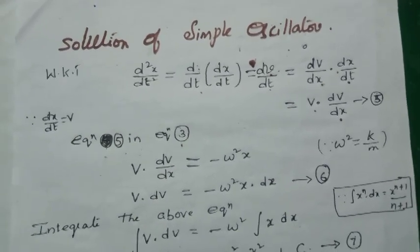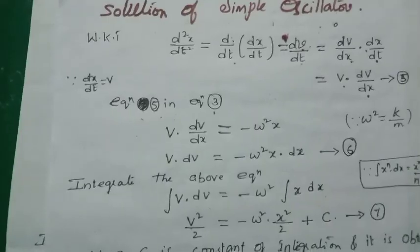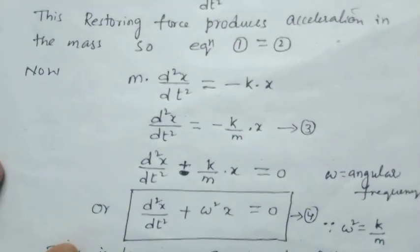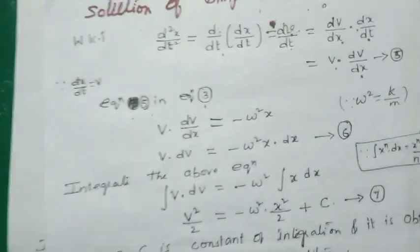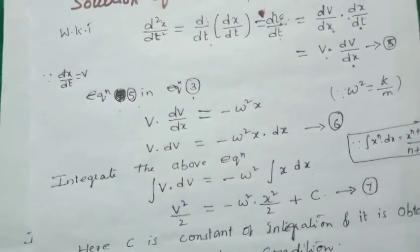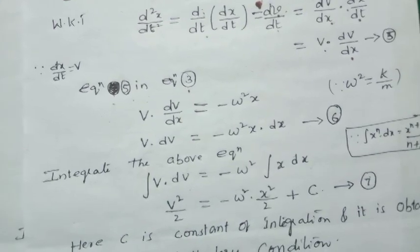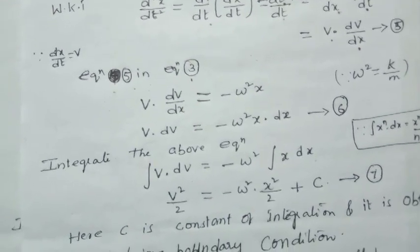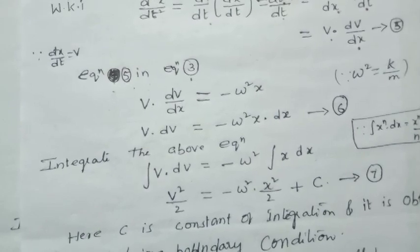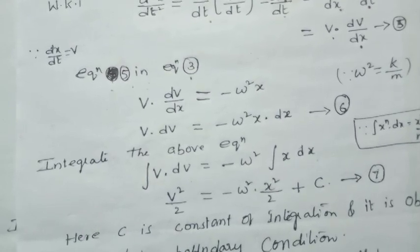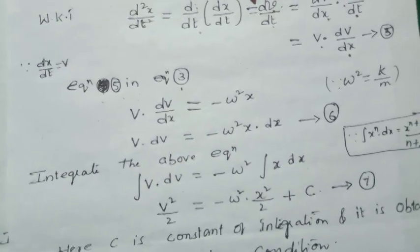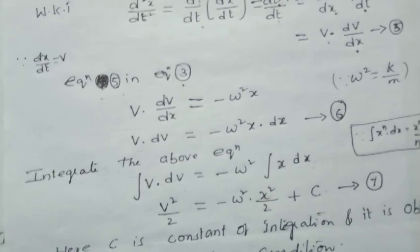Now substituting equation (5) into equation (3), which is d²x/dt² = −(k/m)x = −ω²x, we get v·(dv/dx) = −ω²x. By variable separation: v dv = −ω²x dx, that is, we move the dv terms to the v side and the dx terms to the x side.